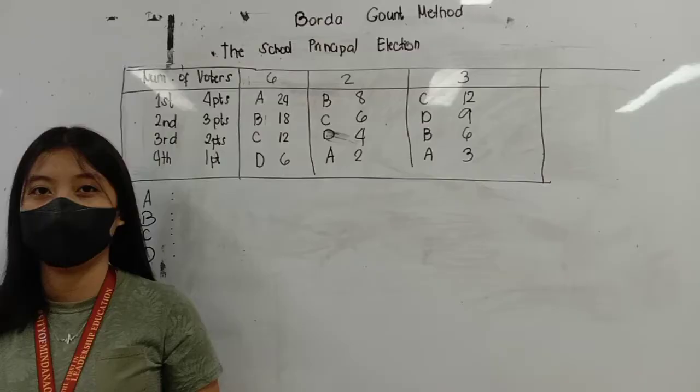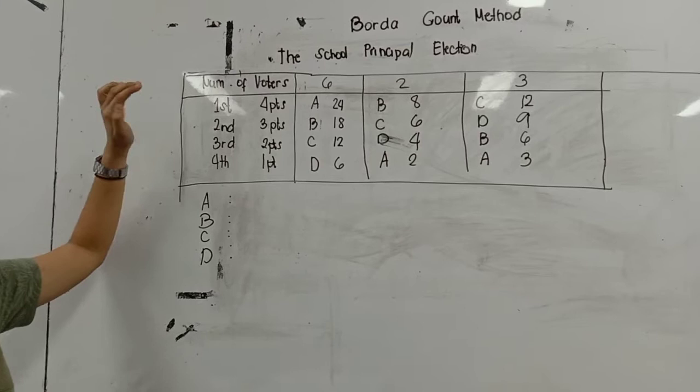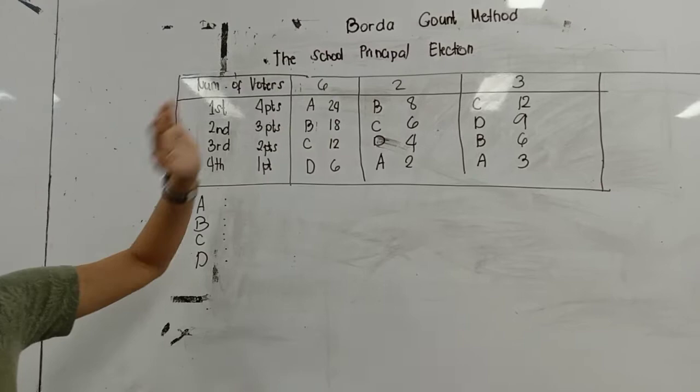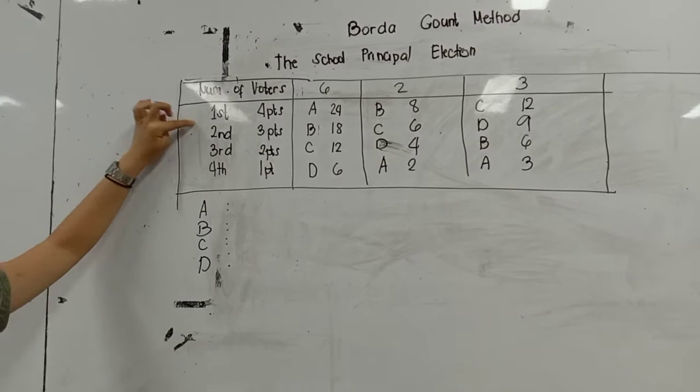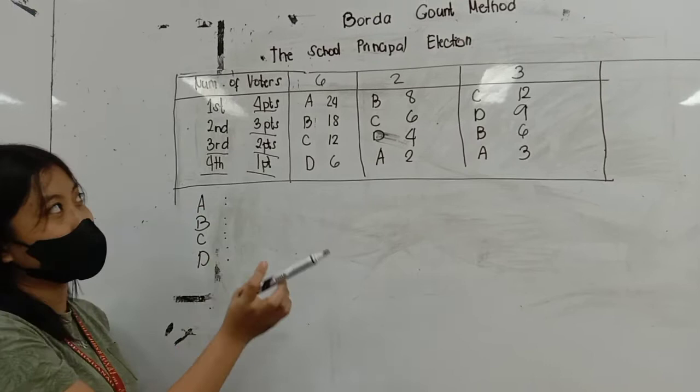Now we have the second example: a school principal election. The number of voters — with votes of 6, 2, and 3 — rank candidates first through fourth. The first choice gets four points, the second choice gets three points, the third choice gets two points, and the fourth choice gets one point.